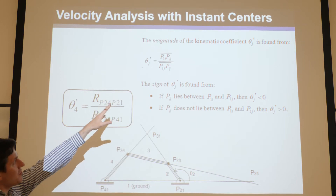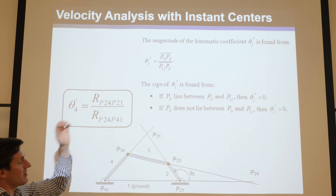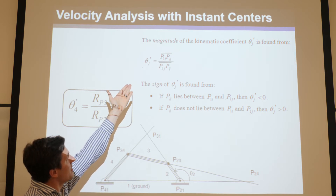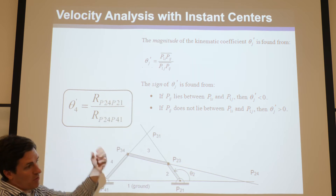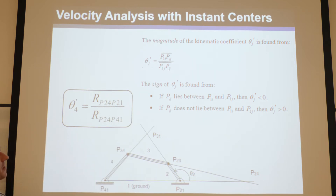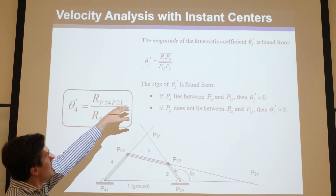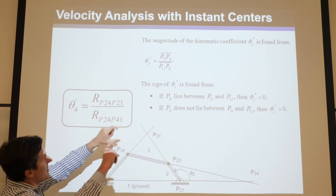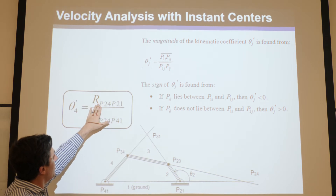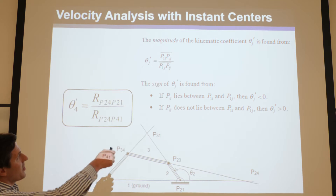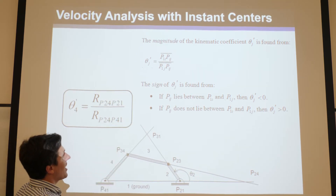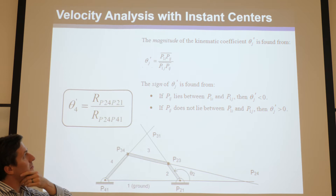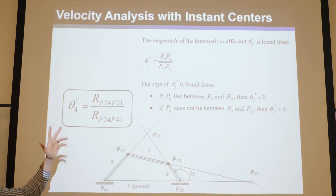This is a slightly new convention shown here — hopping back from the book convention to my notes convention, but it's easy to follow. P represents an instant center, and the two indices tell you which two bodies are being compared, just like p24 or p1j. Drawing a bar over two P's means the line connecting those two instant centers, similar to an r-vector. Basically: to find theta_j prime, you use p1i and pij, and the order of those indices doesn't matter — it could be p1i or pi1, pij or pji.